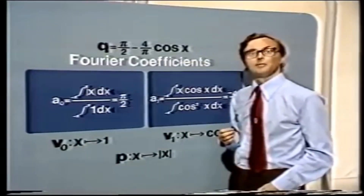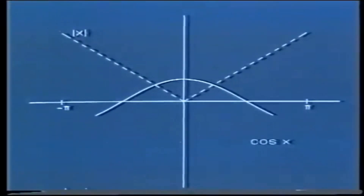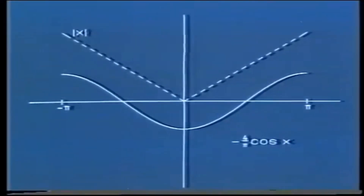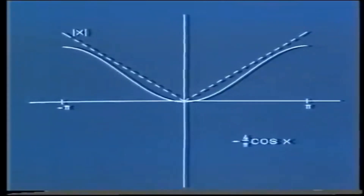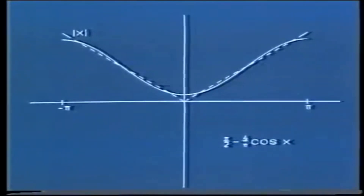This is the function mod X from minus pi to pi. And this is the function cos X from minus pi to pi. Notice that both functions are symmetrical about the y-axis. Multiplication of the cos X function by the Fourier coefficient minus 4 over pi gives this function. If we want to approximate this to the mod X function, we need to translate in the plus Y direction. The best overall approximation is when the translation is through plus pi by 2. So the best approximation we can now get for mod X is pi by 2 minus 4 over pi cos X — the closest we can get to mod X as a linear combination of the orthogonal functions 1 and cos X.